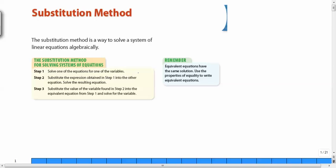You have to solve one of the equations for one of the variables. You need to substitute that variable's expression into the second equation and then solve for the other variable.